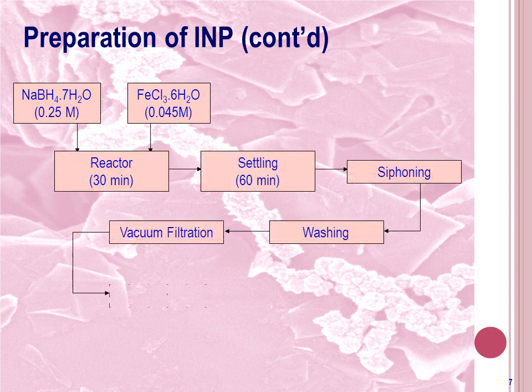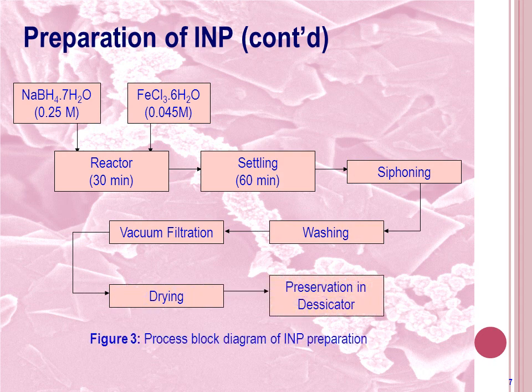This is the setup of iron nanoparticle production, where the reaction took place in a plastic reaction vessel surrounded by ice cubes to keep the reaction temperature low enough. In the semi-batch procedure, ferric chloride was added to the reactor drop-wise. After that, the reaction mixture was settled for about an hour and the water above the particles was siphoned. The particles were then washed with sufficient deionized water, filtered by vacuum filtration, dried in a vacuum dryer at low temperature, and preserved in a desiccator after drying.